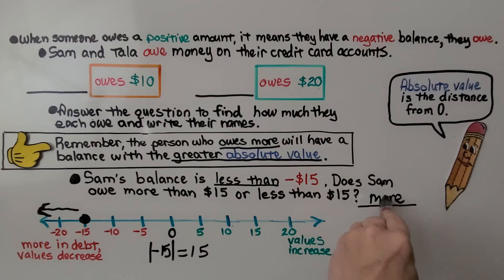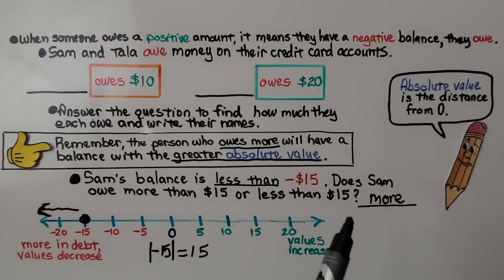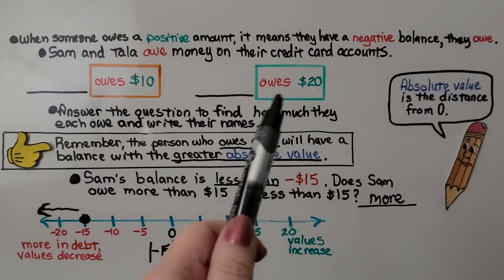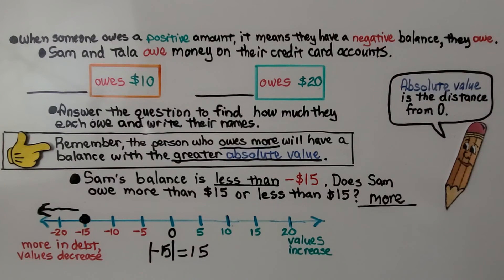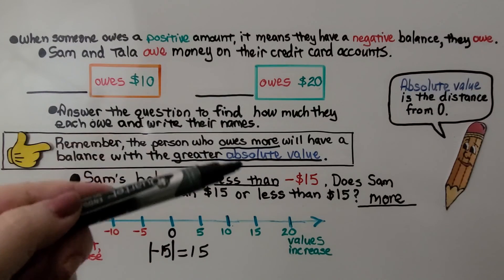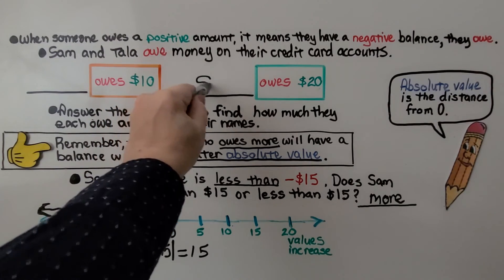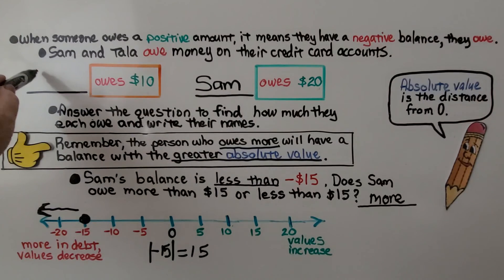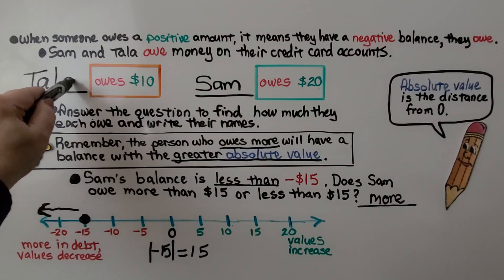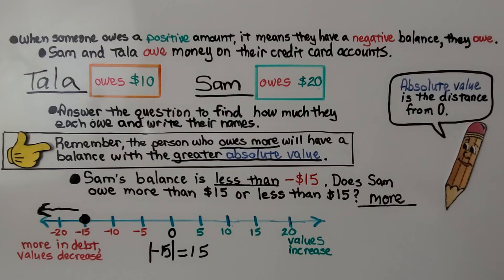So Sam is the one who owes $20, and Tala is the only one left — process of elimination. Remember, absolute value is the distance from zero. Less than negative $15 means farther left on the number line than negative $15, so it has a greater absolute value — it's farther from zero.